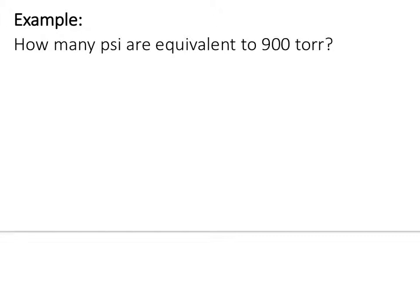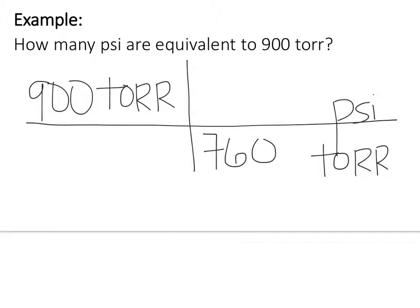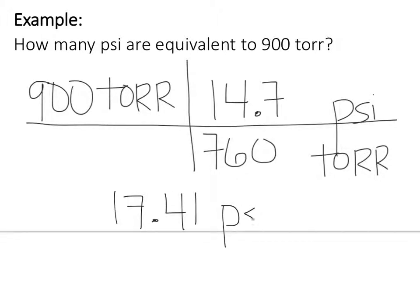Here's another one — if you didn't try the first one, stop and try this one first. 900 Torr converted to PSI. We have 760 Torr equal to 14.7 PSI. Put that in your calculator and you get 17.41 PSI.